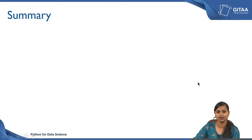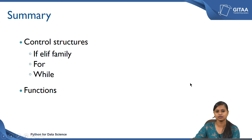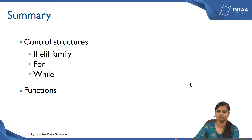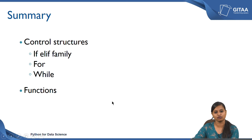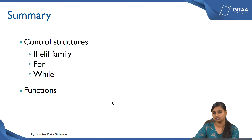We have now come to the end of the lecture. To summarize: we covered control structures including the if-elif family, followed by for and while loops with examples. We also covered functions — how a function can accept multiple inputs and give a single output, and how a function can accept multiple inputs and return multiple outputs as a single object.